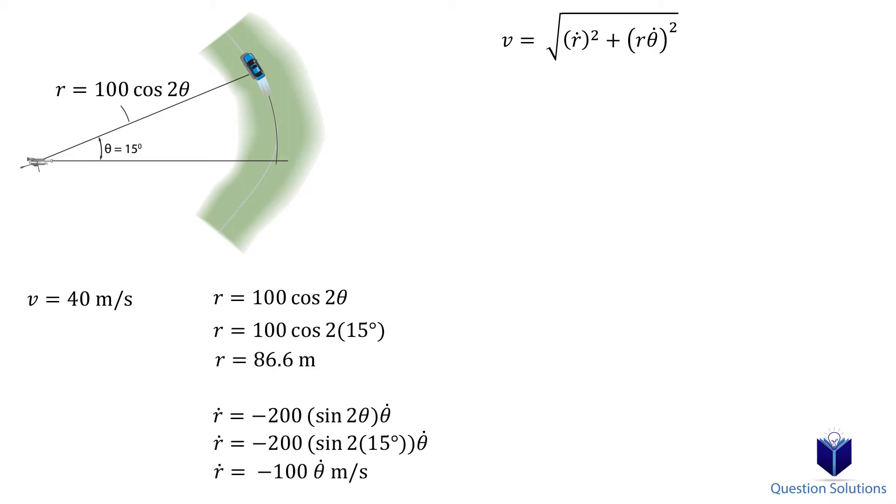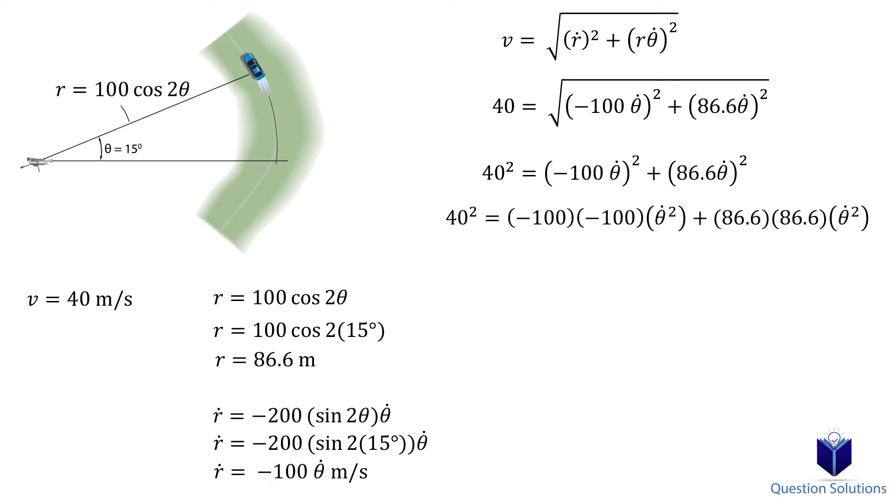Now we can go back to our magnitude of velocity equation and start plugging values in. Square both sides. Now expand the brackets. Solve for the angular velocity.